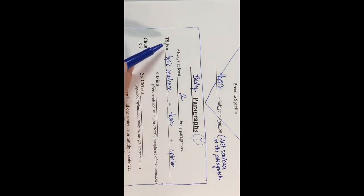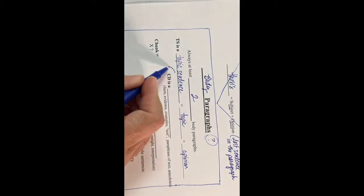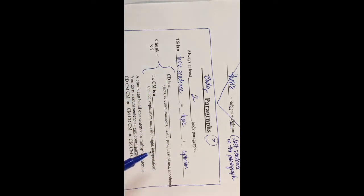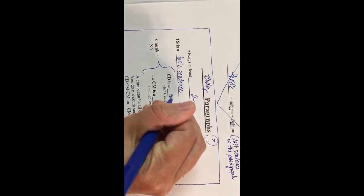This body paragraph starts with one of those topic sentences, and then you have to support it with chunks. Your chunks are made of two things: one CD and two CMs. The CD stands for concrete detail.